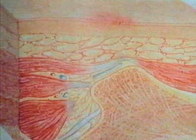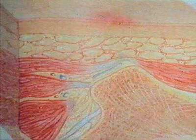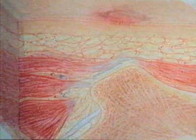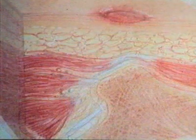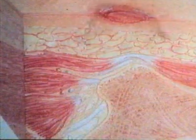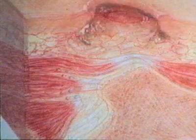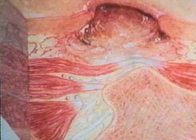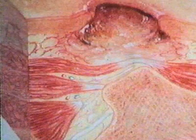Pressure ulcers are localized areas of tissue necrosis that develop when soft tissue is compressed between a firm surface and an underlying bony prominence.